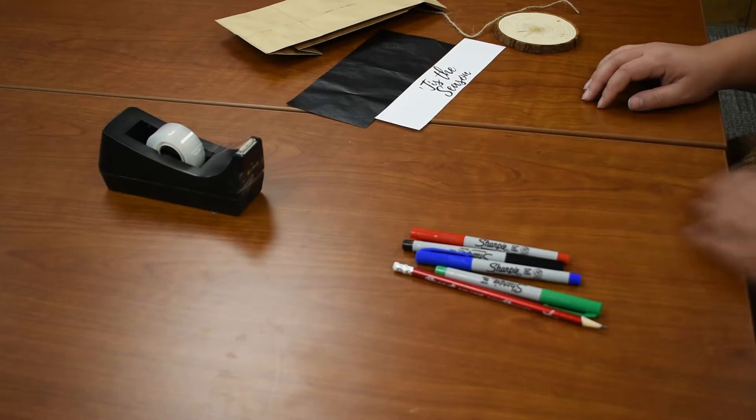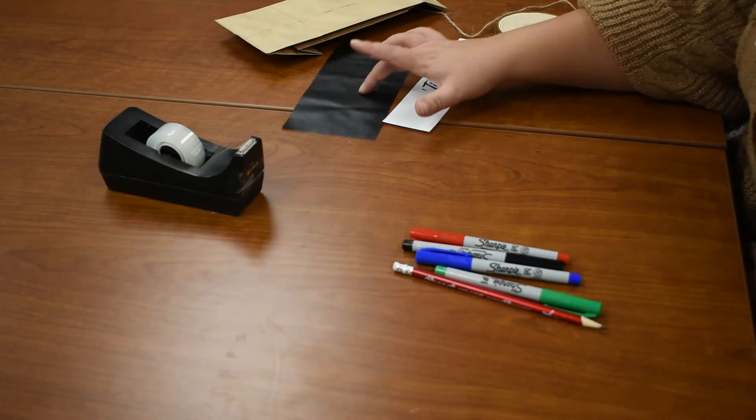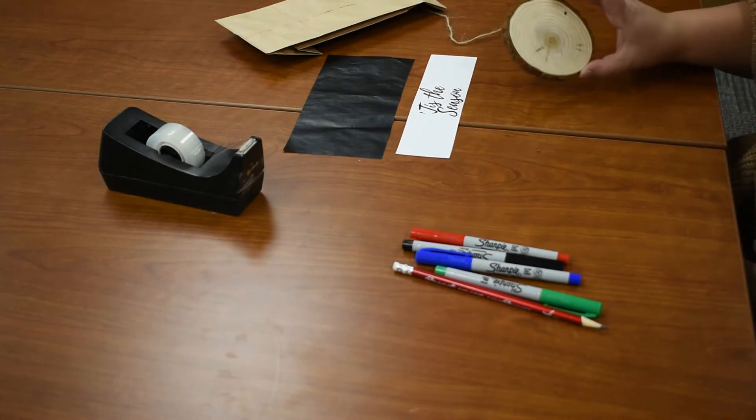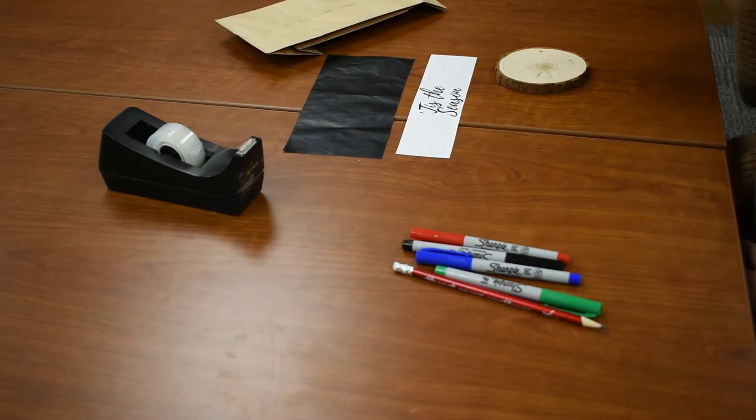In each kit you will get transfer paper, a stencil, a wooden round piece with a pre-drilled hole, and a piece of twine.